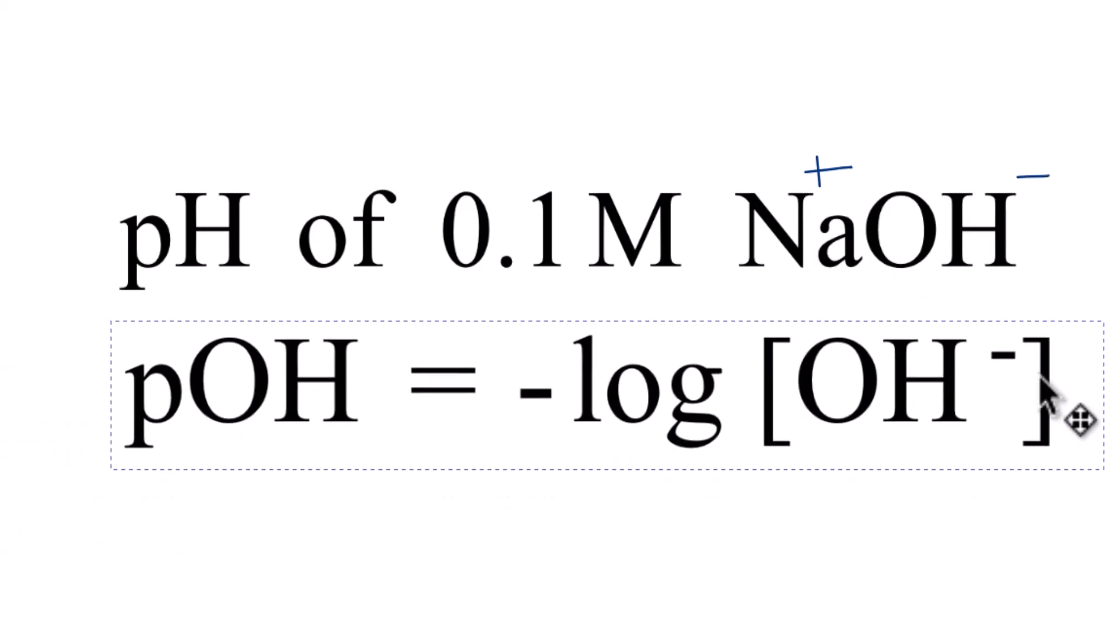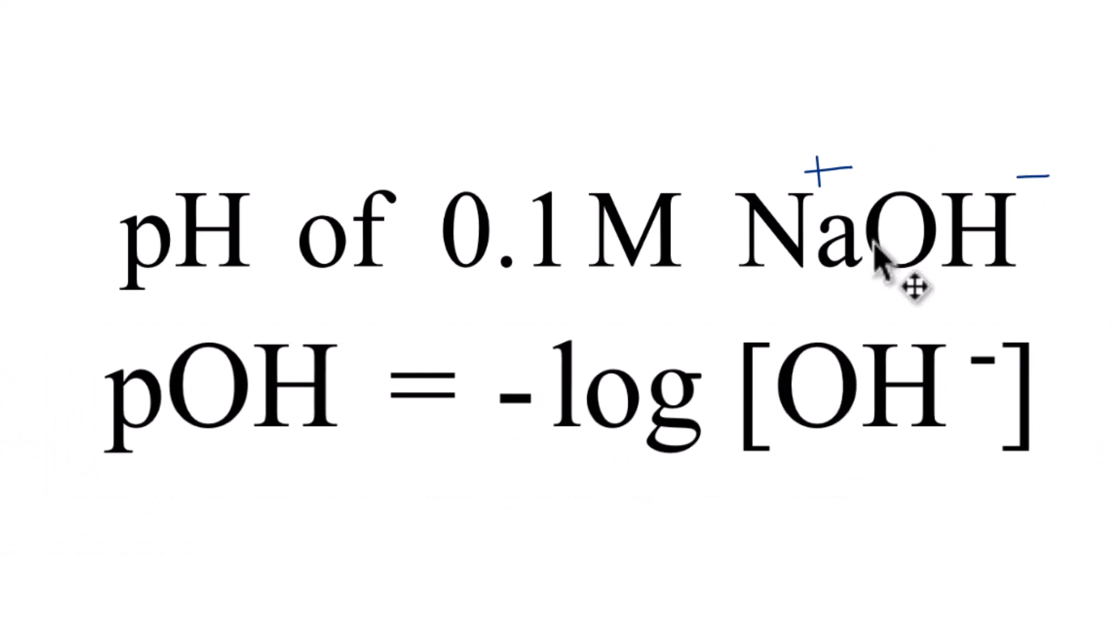And that's where we find the pOH, because we have hydroxide up here. Just the negative log of the concentration of the hydroxide ion. So to find out what the pH of 0.1 molar solution of sodium hydroxide, we first need to find the pOH.